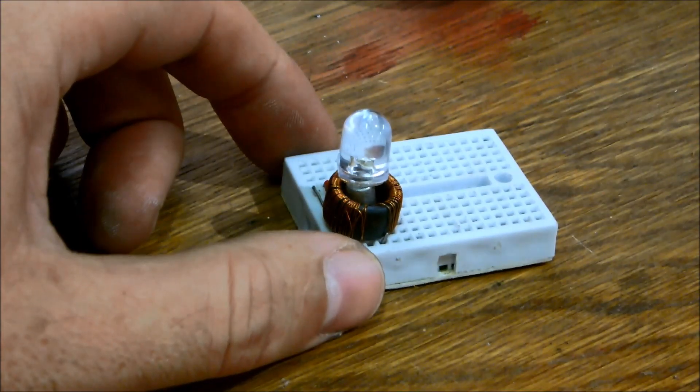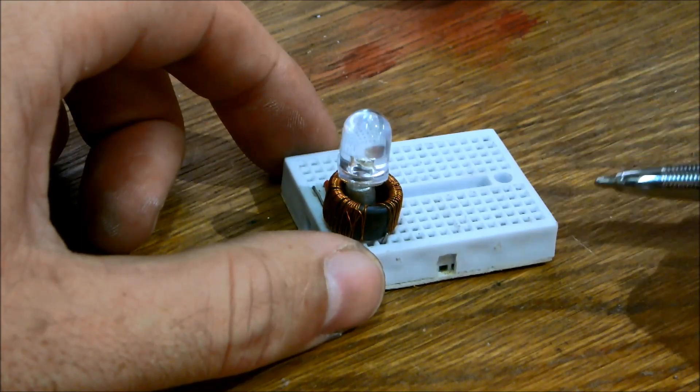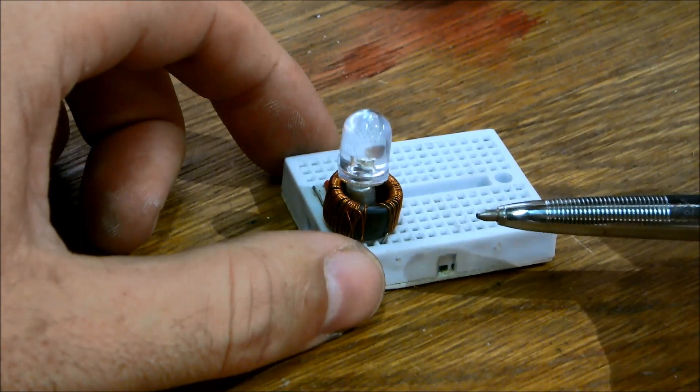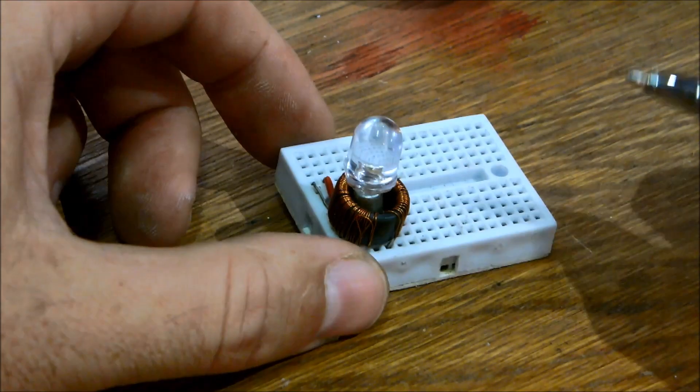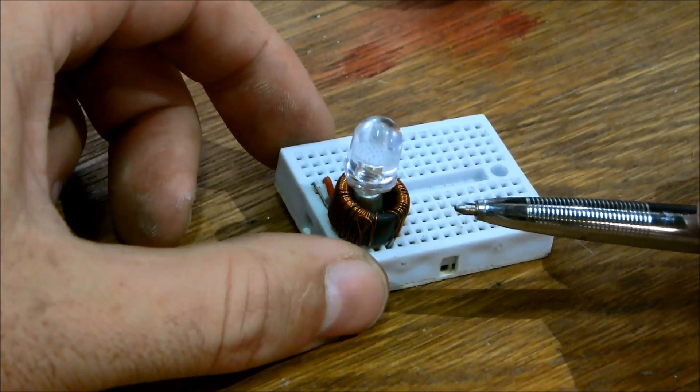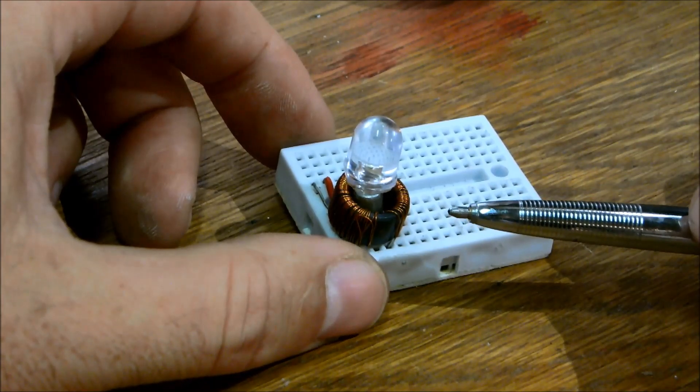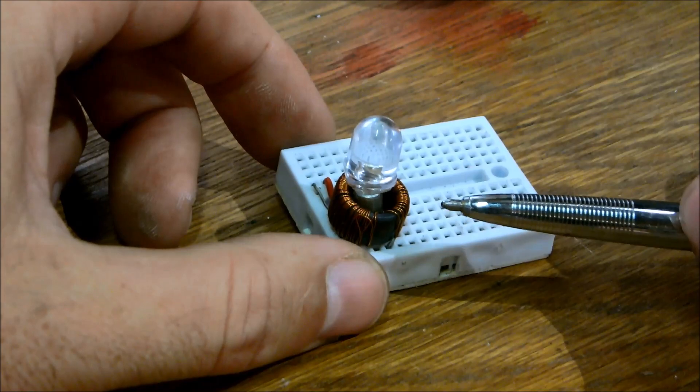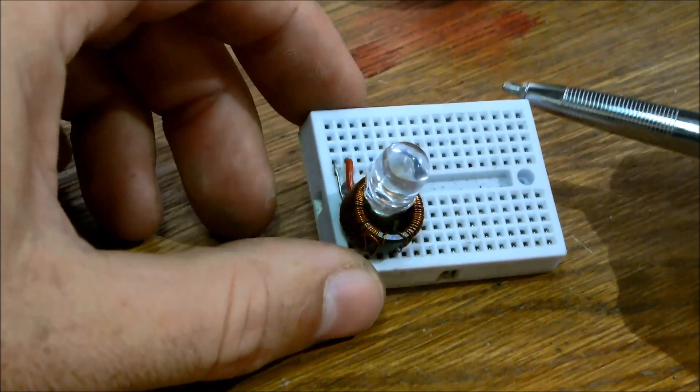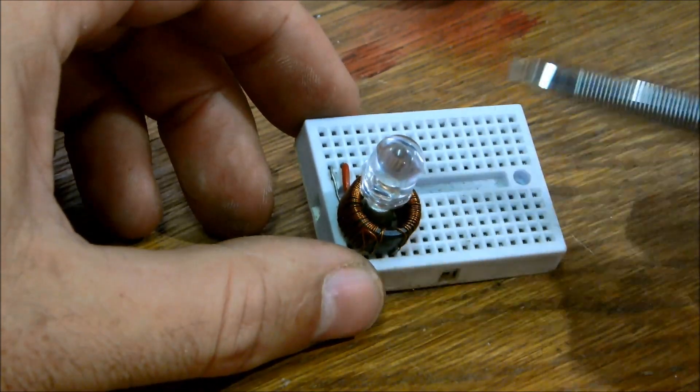These three components form what is known as a Joule Thief circuit. It is a slightly simplified version. What it does is take very low voltage input and then boost that in pulses so that you can power high voltage components such as LEDs.